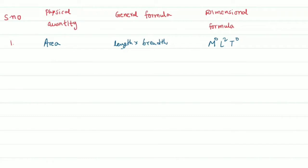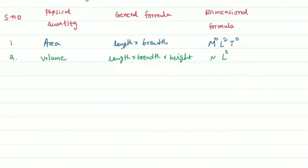Next is volume. The formula for volume is length into breadth into height. So the dimensional formula for volume is M power 0, L power 3, T power 0.